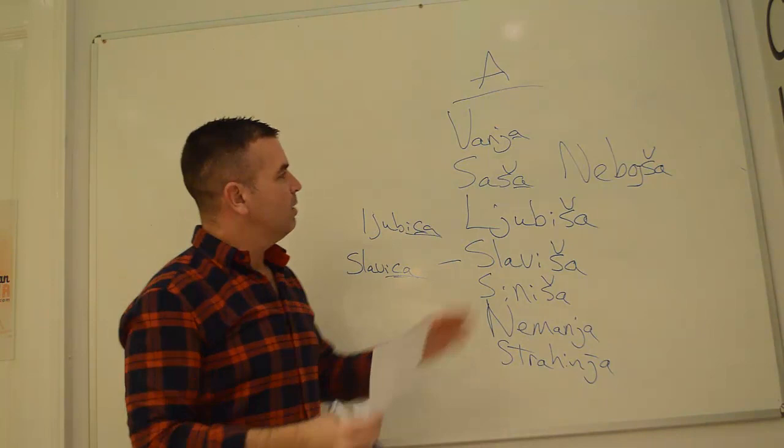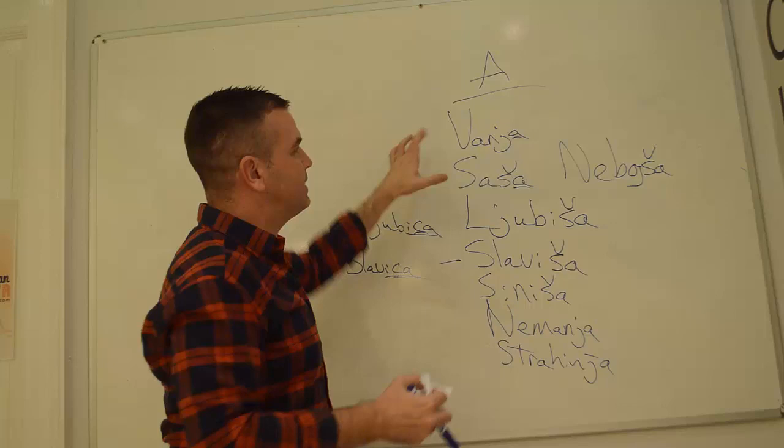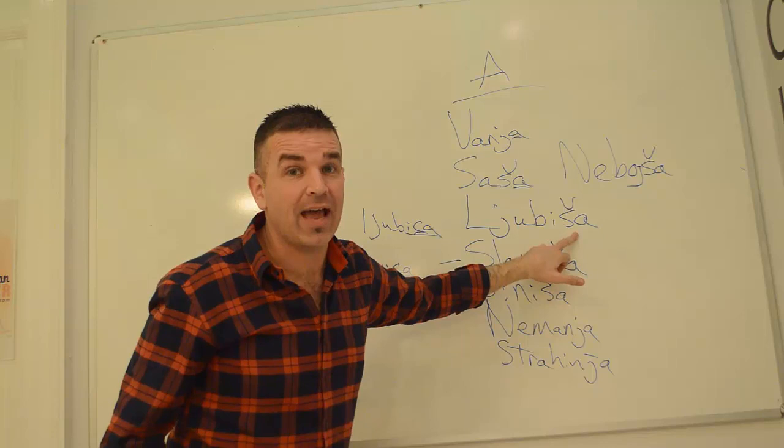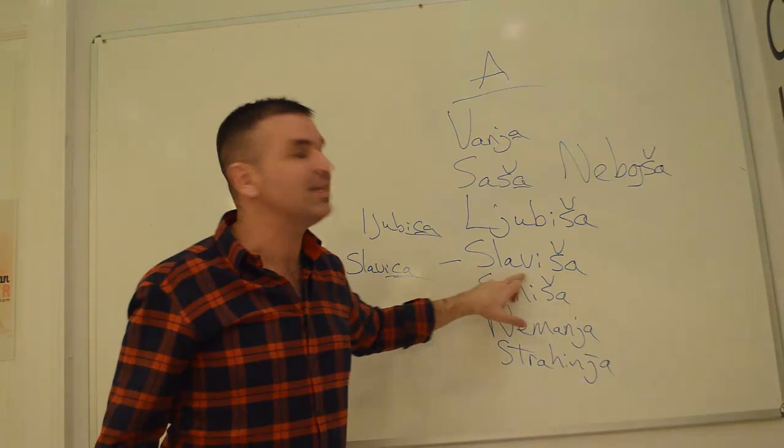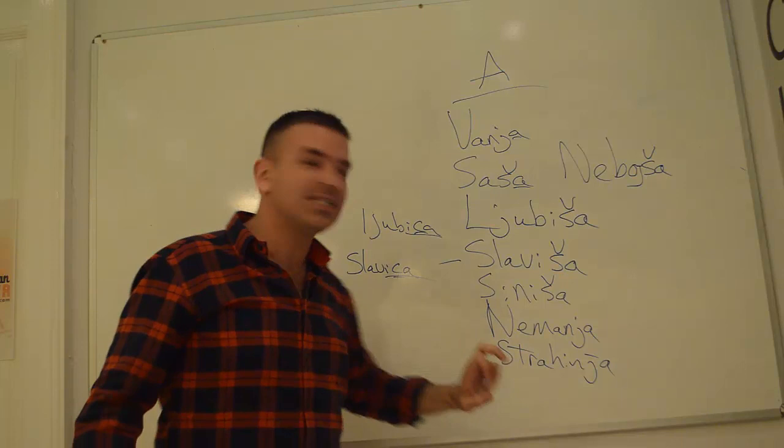Men's names - there's not very many that end in the letter A, but this is the list of them. Vanya, boy or girl. Sasha, boy or girl. Ljubisha is a boy. Ljubica is a girl. Slavica is a girl. Slavisha is a boy. Sinisha, Nemenya, Strahya. And that's your little lesson for today.